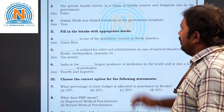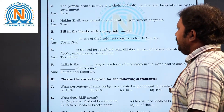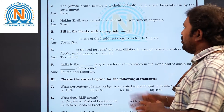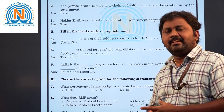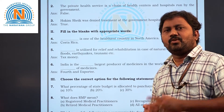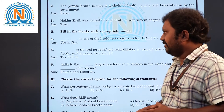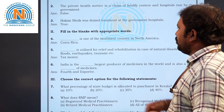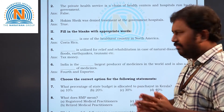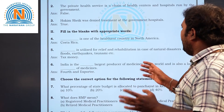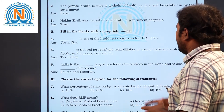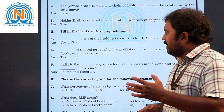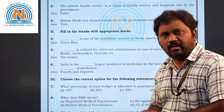Now coming to fill in the blanks. Fourth question: blank is one of the healthiest countries in North America — the answer is Costa Rica. Fifth question: blank supplies relief and rehabilitation in case of natural disasters such as floods, earthquakes, tsunamis, etc. — the answer is tax money.